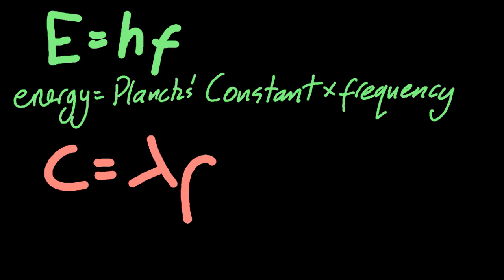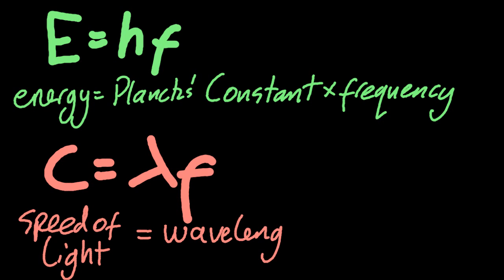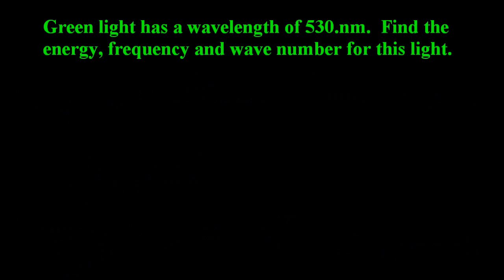The next equation you need to know is C equals lambda f. C is the speed of light, lambda is how wavelength is written, multiplied by frequency. So three equations in total, including wavenumber is one over wavelength.